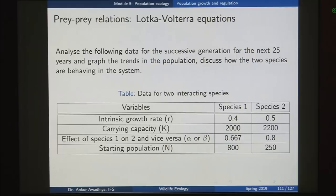Similarly, we can look at interactions of two different herbivore species. In this example, the intrinsic growth rates for two species are given, the carrying capacity is 2200, the competition coefficients alpha and beta are given, and the starting populations are given — with species 1 having 800 individuals.